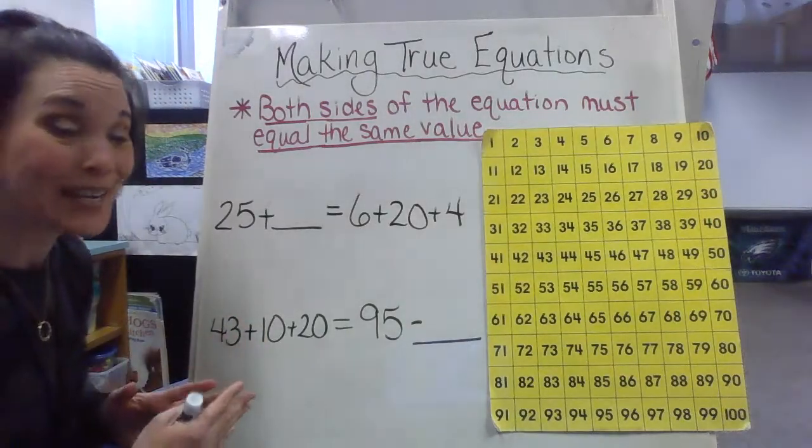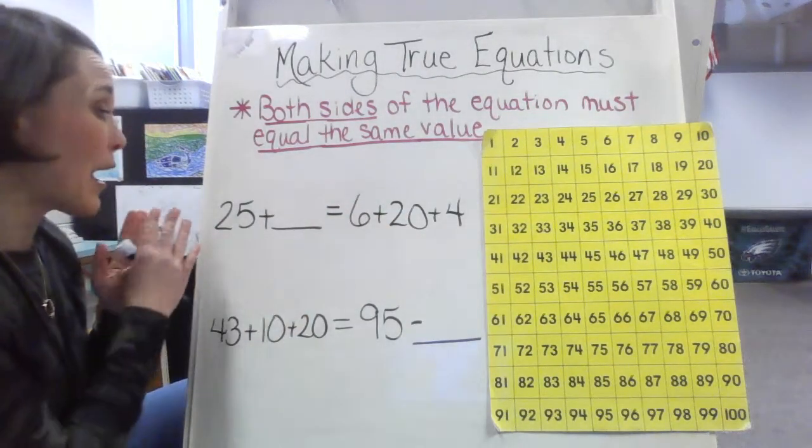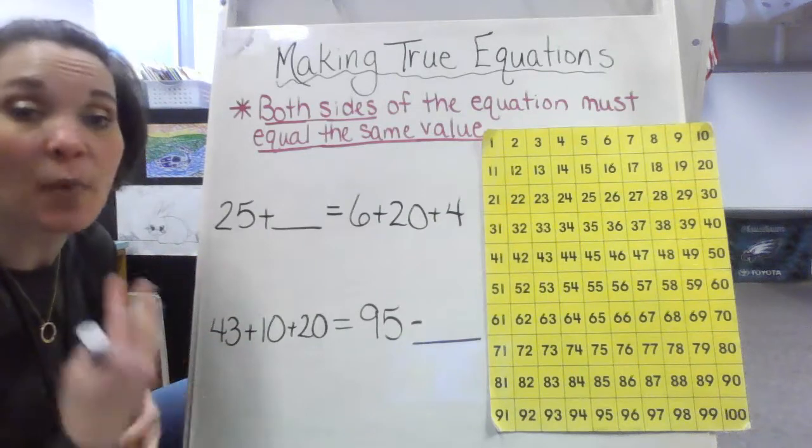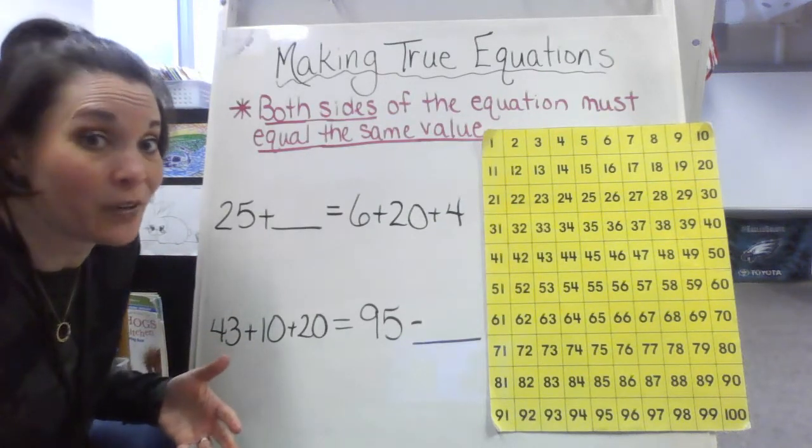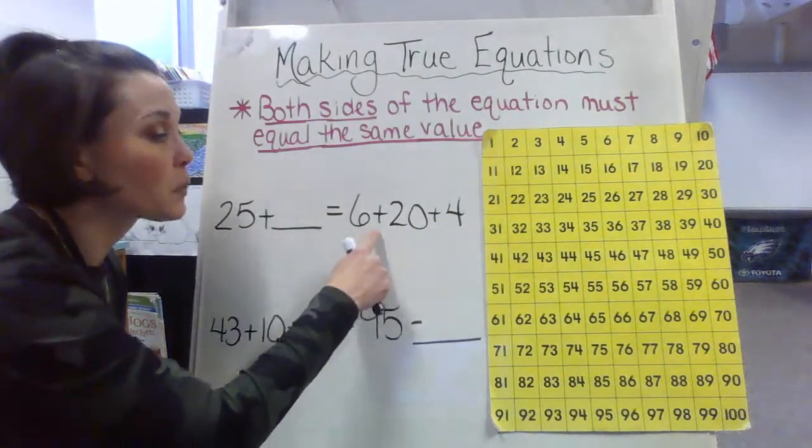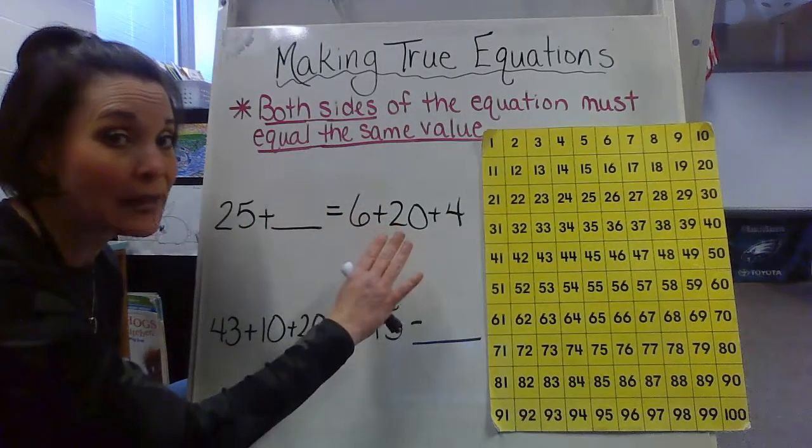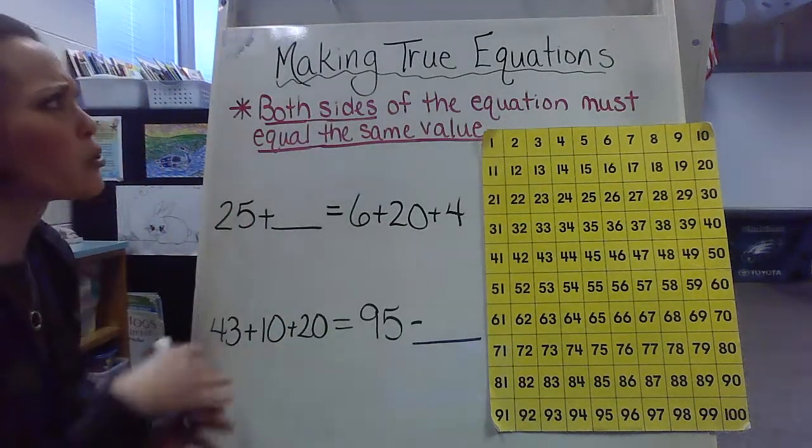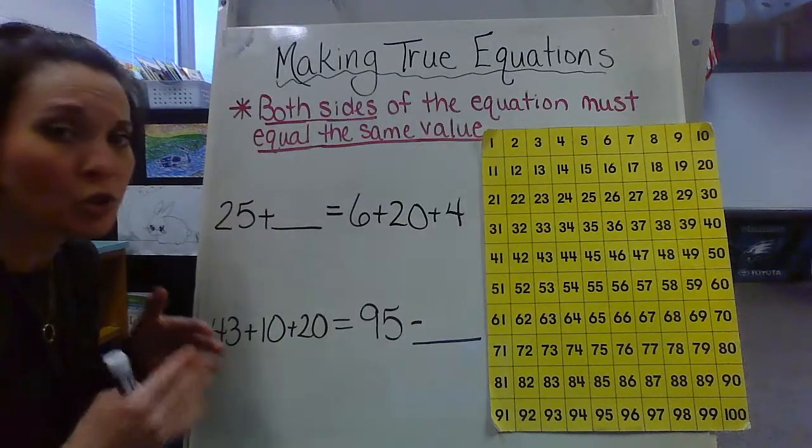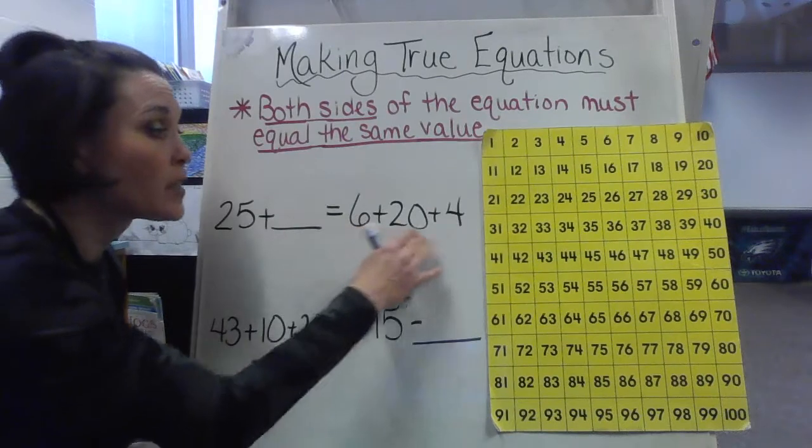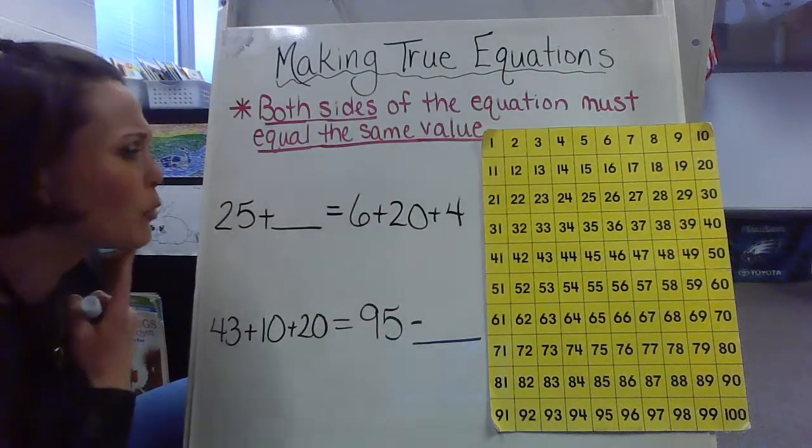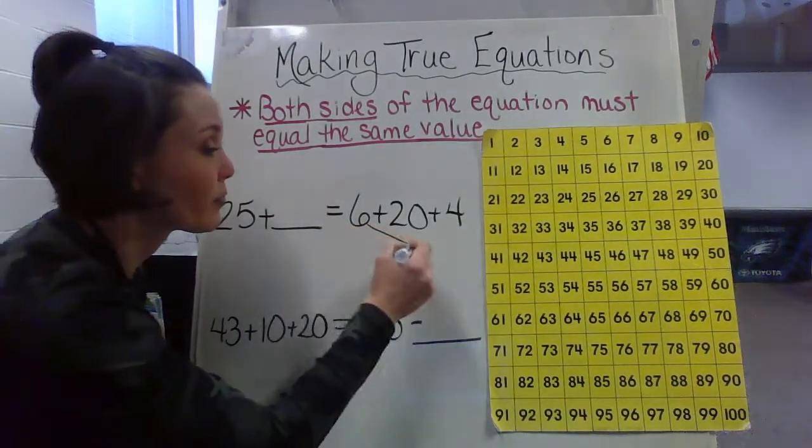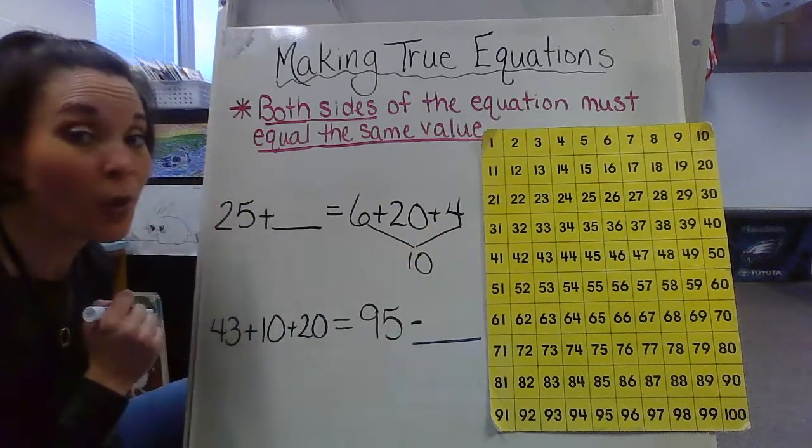We have 25 plus blank equals 6 plus 20 plus 4. So as you can see, they're a little bit more lengthy. My number values are a little bit higher. Things are a little bit more difficult. I might have to take advantage of some other strategies that we've learned in order to help figure this out. So if I'm looking at 6 plus 20 plus 4, I could go ahead and add that. But I think I might use my number string approach. If you remember number strings a long time ago, we would have to use certain steps in order to figure out something just like this. So if I'm looking, I could find a way to make 10. 6 and 4 makes 10.